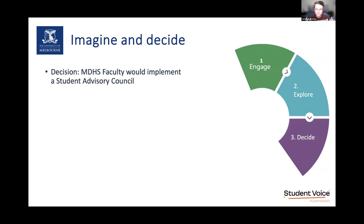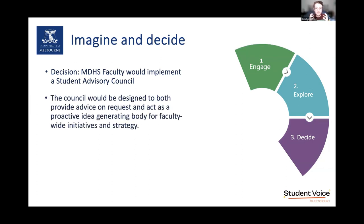Our broad decision was to implement a Student Advisory Council situated at the highest level of the faculty, reporting directly to the Dean and the Faculty Executive Committee rather than sitting within a specific committee lower down in the governance structure. It was designed to be a two-way street: providing advice on request, but also acting as a proactive idea-generating body - so we could go to relevant leaders and say we think it might be better to discuss a particular topic, or we have an idea we'd like to explore further.